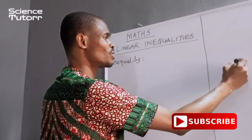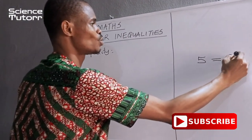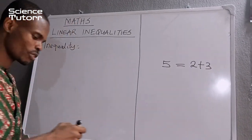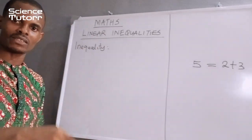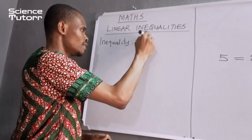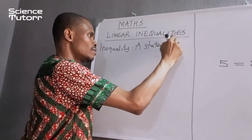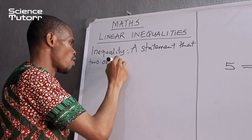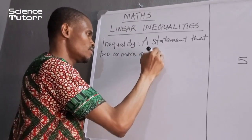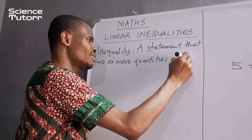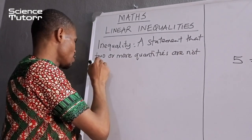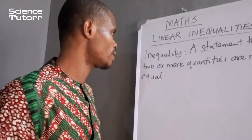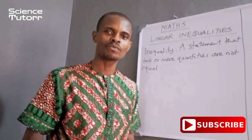In terms of equality, we could say five is equal to two plus three. You can see two plus three is five, so five is equal to five. But in inequality, we say it is a statement that two or more quantities are not equal. That's what it means — they are not equal to each other.